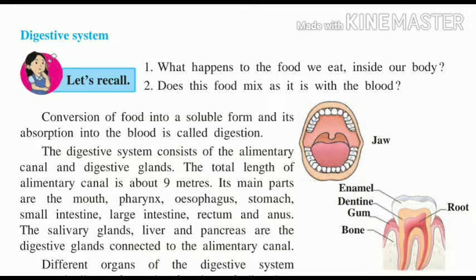The digestive system consists of the Alimentary Canal and Digestive Glands. The total length of the Alimentary Canal is about 9 meters. Its main parts are Mouth, Pharynx, Esophagus, Stomach, Small Intestine, Large Intestine, Rectum, and Anus. The salivary glands, liver, and pancreas are the digestive glands connected to the Alimentary Canal.